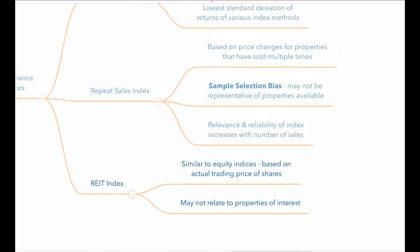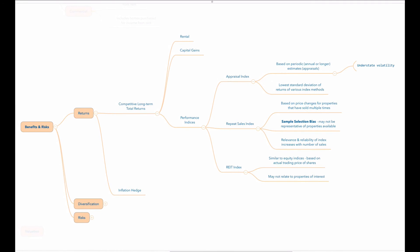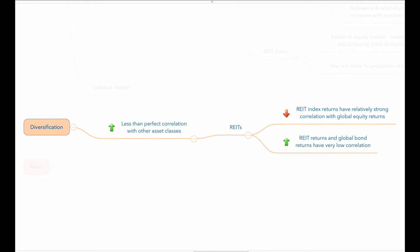Let's look at some of the diversification benefits of real estate. Because of the less than perfect correlation with other asset classes, the likelihood of diversification benefits is one of the prime reasons for investing in real estate. Historically, REIT index returns and global equity returns have had a strong correlation, on the order of 0.6. This is because business cycles affect REITs and global equities similarly. On the upside, the correlation between global bond returns and REIT returns has been very low historically.